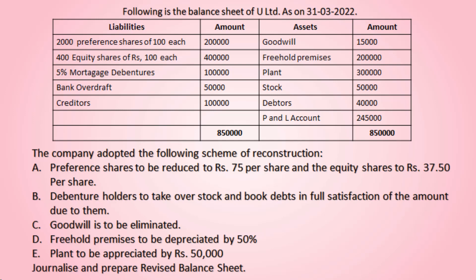Preference shares to be reduced to Rs.75 per share and equity shares to Rs.37.50 per share. So the preference share actual value is Rs.100, which has to be reduced to Rs.75. The equity share value is also Rs.100, which has to be reduced to Rs.37.50.